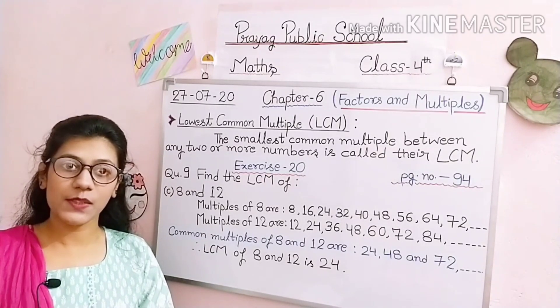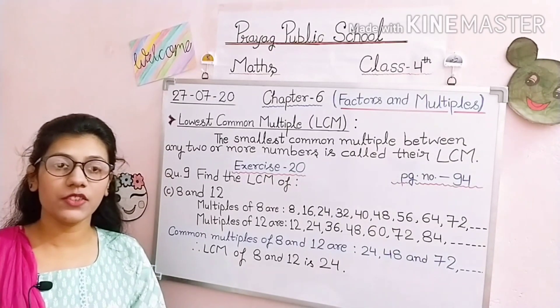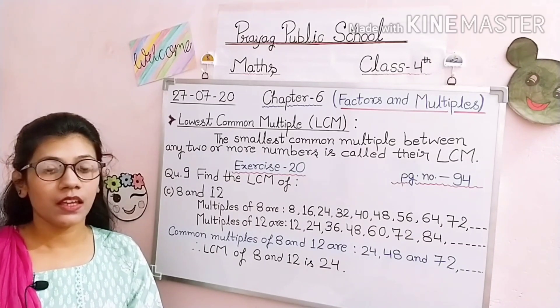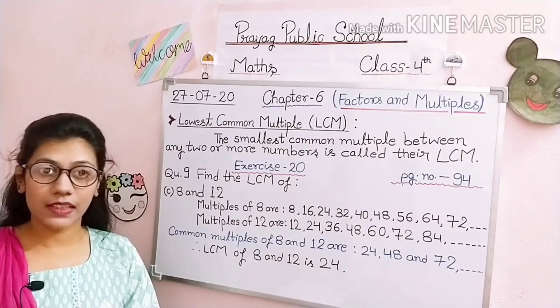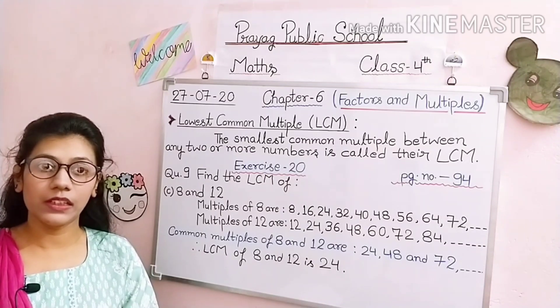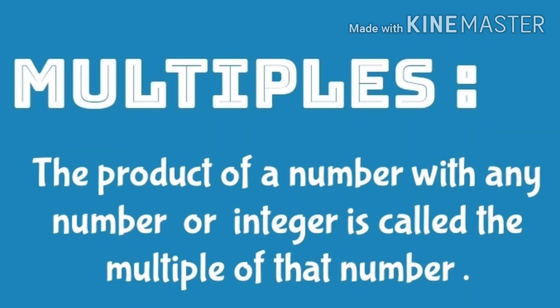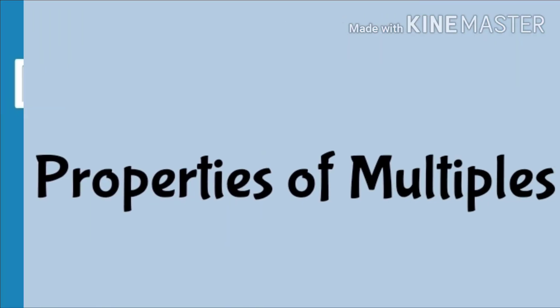Good morning students of Class 4. We are in Chapter 6: Factors and Multiples. Before starting today's class, let's do a small recap of what we learned previously. We learned about multiples — the product of a number with any number or integer is called the multiple of that number. To find the multiples of any given number, we multiply it by numbers one by one to get the series of multiples.